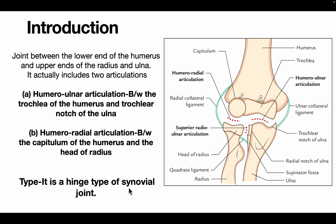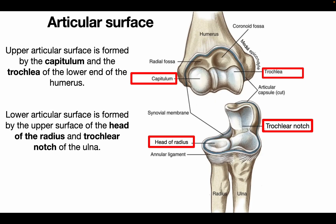Type: it is a hinged type of synovial joint. The upper articular surface is formed by the capitulum and the trochlea of the lower end of the humerus, while the lower articular surface is formed by the upper surface of the head of the radius and the trochlear notch of the ulna.